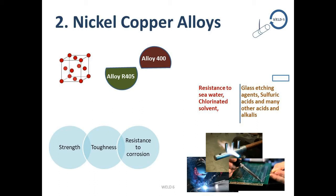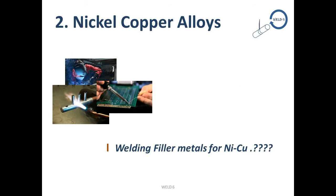Nickel-copper alloys are readily joined by welding, brazing and soldering when recommended practices are followed. Welding filler metal designed to improve strength and to eliminate porosity in the weld metal differs somewhat in chemical composition. Welding without the addition of filler metal is not recommended for manual gas tungsten arc welding, although a few automatic or mechanized welding procedures do not require filler metal addition. Welding filler metals applicable to this alloy group are also widely used in the welding of copper alloys.